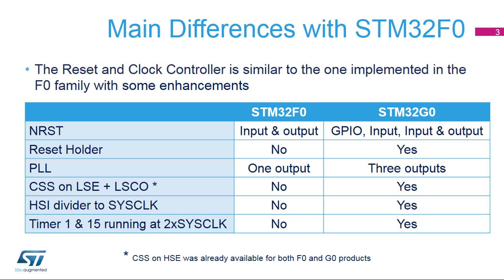The NRST pin has three possible usages. The first usage is a reset input, used by an external logic to signal a reset condition to the STM32G0. The second usage is a reset input and output, where any valid reset signal on the pin is propagated to device internal logic and all internal reset sources are externally driven through a pulse generator to this pin.